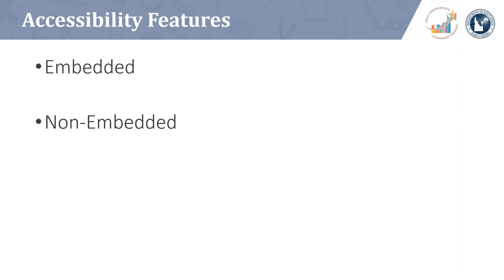The IRI by iStation includes accessibility features that are both embedded and non-embedded. Embedded features are those that are available within the testing platform or that can be turned on and off by district or school manager users. Non-embedded features are designed to support IRI administration but are outside of the testing platform. Test administrators should be familiar with all the accessibility features within iStation prior to proctoring the assessment. Consult your district or school IRI implementation coordinator with questions regarding accessibility for individual students.